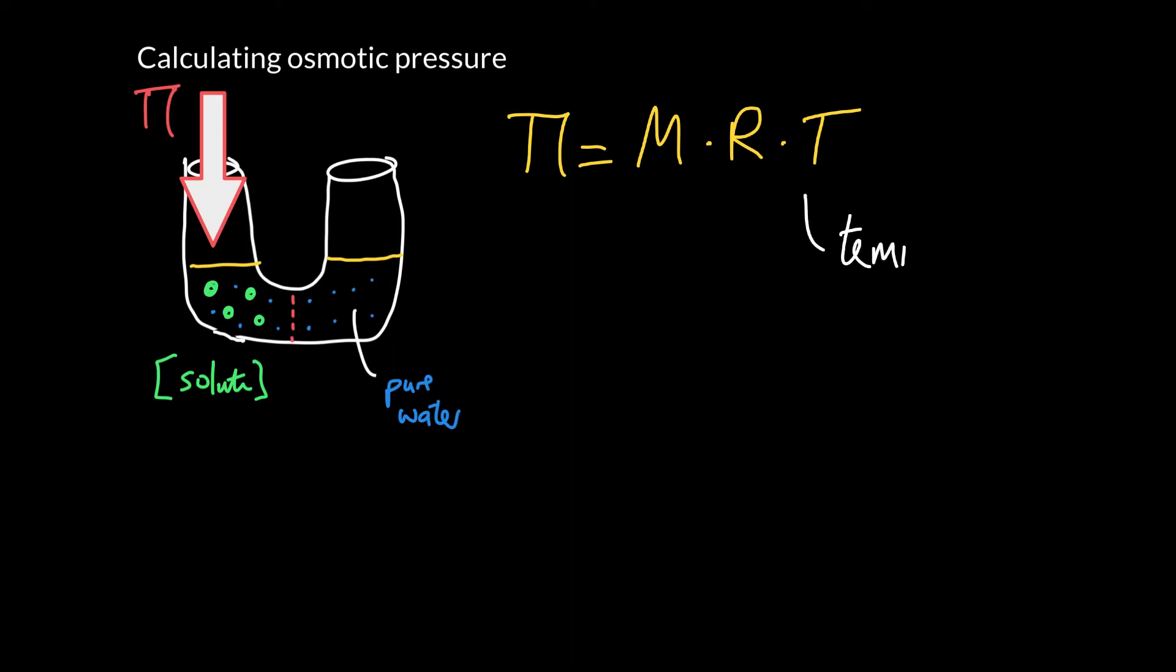This is the temperature in Kelvin. R is the ideal gas constant. And it's kind of interesting that although we're not dealing with a gas here, we still have the ideal gas constant here. Some people call it the universal gas constant because it seems to crop up in lots of places in the universe. And this is the molar concentration of the solute. So this is basically the total molar concentration of anything dissolved in the solution.